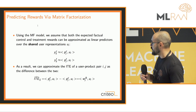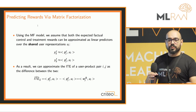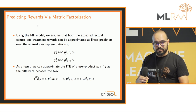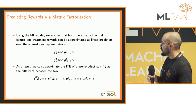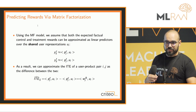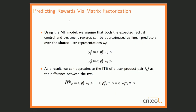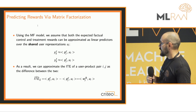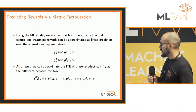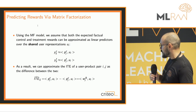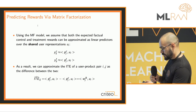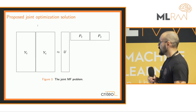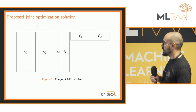Going back to our proposal: we want to use these two samples and do matrix factorization. Assuming the problem is low rank, the response on control and treatment is actually only a function of a shared user representation — users don't change. What changed is that we played arms with different frequencies in control and treatment. The incremental treatment effect between the two policies is just the difference between two inner products, making it an inner product itself: U_i with an unknown W_delta vector representing the incremental effect of treatment versus control population.